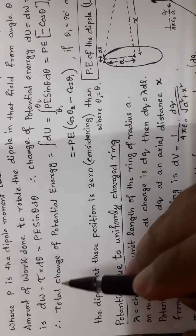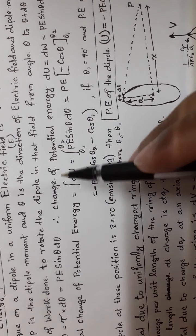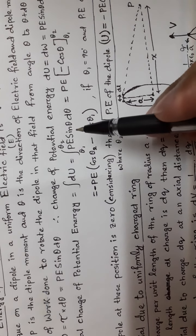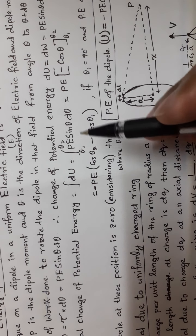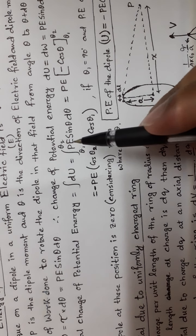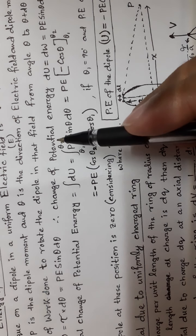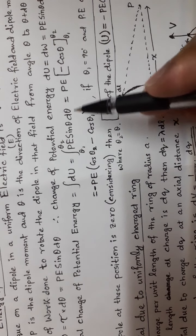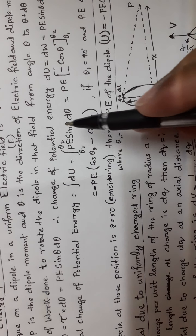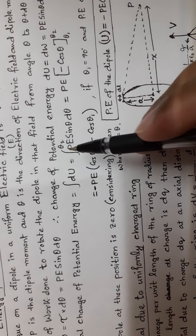The total change of potential energy is the integral of dU, with p E sin of the initial angle, integrated from the initial angle to the final angle theta.